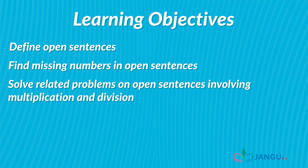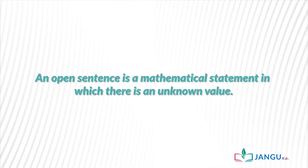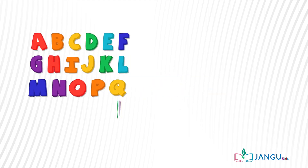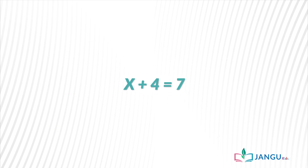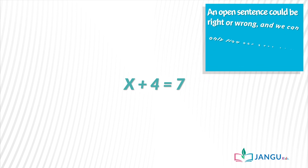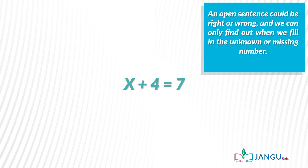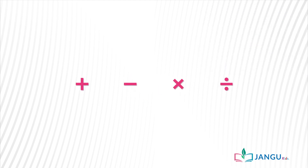An open sentence is a mathematical statement in which there is an unknown value. The unknown value is usually represented with letters or placeholders like squares and triangles. 'x + 4 = 7' is an example of an open sentence. An open sentence could be right or wrong, and we can only find out when we fill in the unknown or missing number. We can add, subtract, multiply, and divide with open sentences.